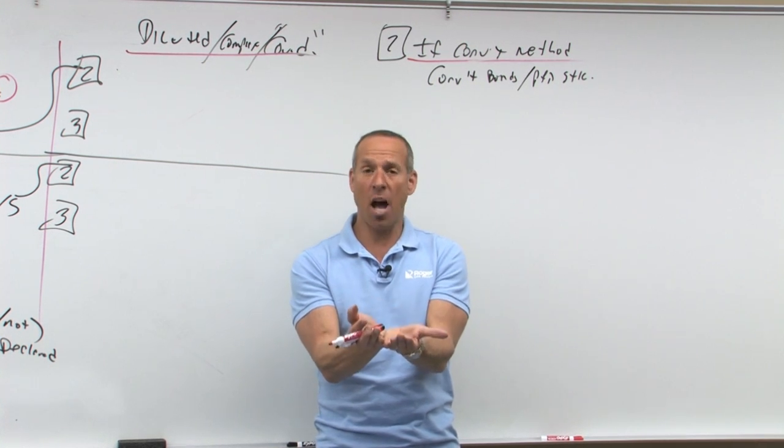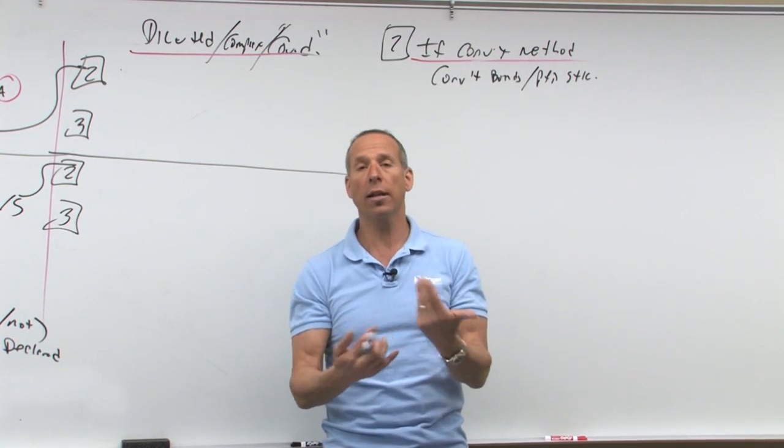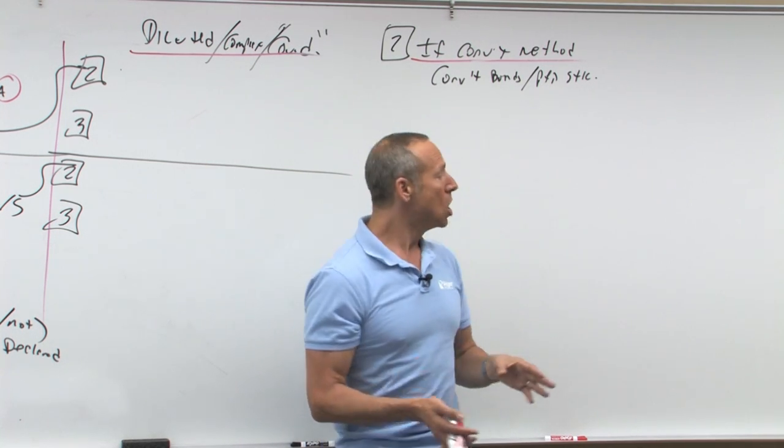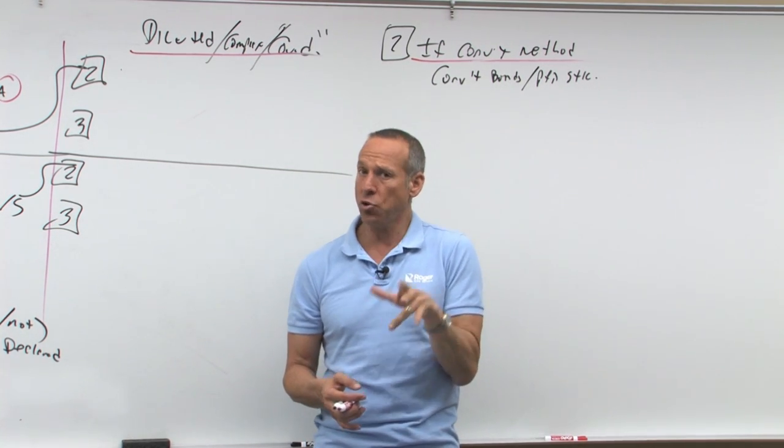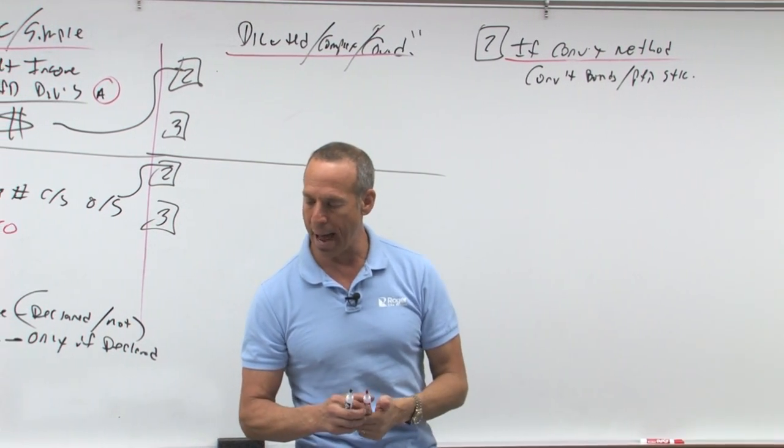So the if converted method says, okay, can you convert? Yes. Is it economically advantageous, meaning it's diluted to everybody else? Yes. Then we go, okay, let's assume you did it, we'll add the numbers in. So if converted method says, if you converted, what would happen? That's where we're going to go back and add back certain amounts.